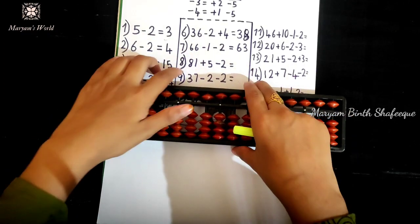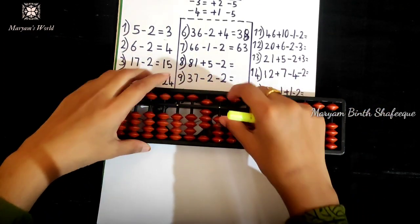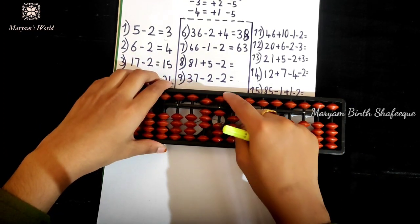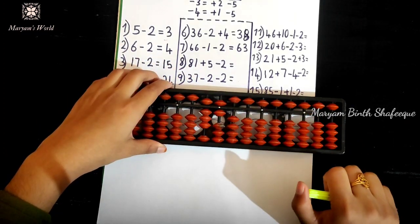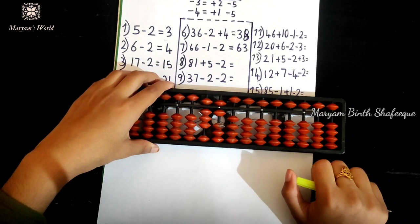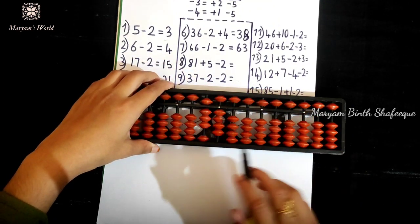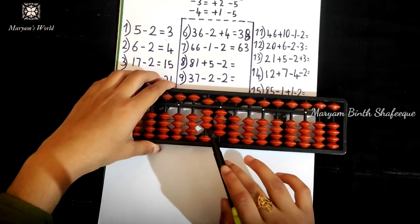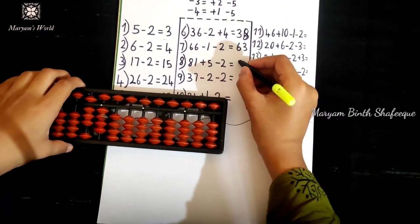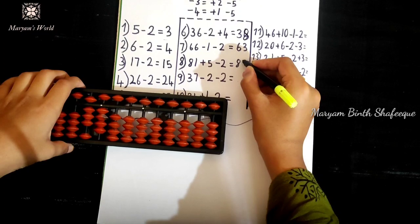Next is 81. Plus 5, plus 5, minus 2, minus 2. Applying the formula: 3M plus 3 minus 4. Result: 84.